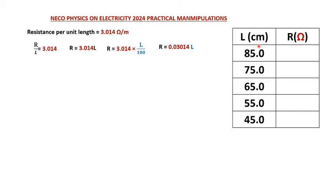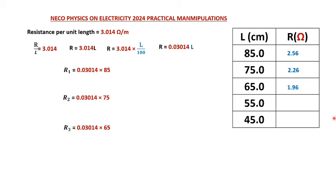Remember this is just for the purpose of this video, and the lengths may be changed. But even if the length is changed, you can use the same formula to obtain the resistance of the wire at any given length. Substituting, I get 2.56Ω for the first length, and repeating this I obtain the resistance values for each of the given wire lengths.